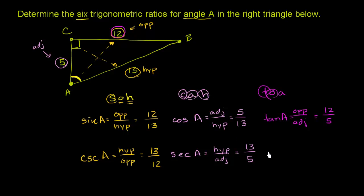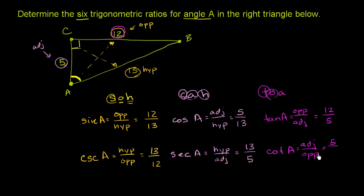Finally, the cotangent. Cotangent is the reciprocal of tangent of A. Instead of opposite over adjacent, it is adjacent over opposite. The adjacent side for angle A has length 5, and the opposite side is 12, so cotangent of A is 5 twelfths — which is the reciprocal of tangent of A, which was 12 fifths.